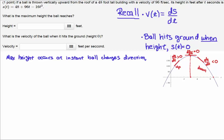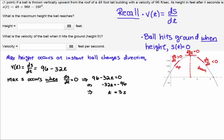Max height occurs at the instant the ball changes direction. We'll take the derivative - that's ds/dt - using the power rule on this function, we get v(t)=96-32t. Max s occurs when the derivative is zero, so we set the velocity equal to zero and solve to get t=3 seconds, which corresponds with what we anticipated.